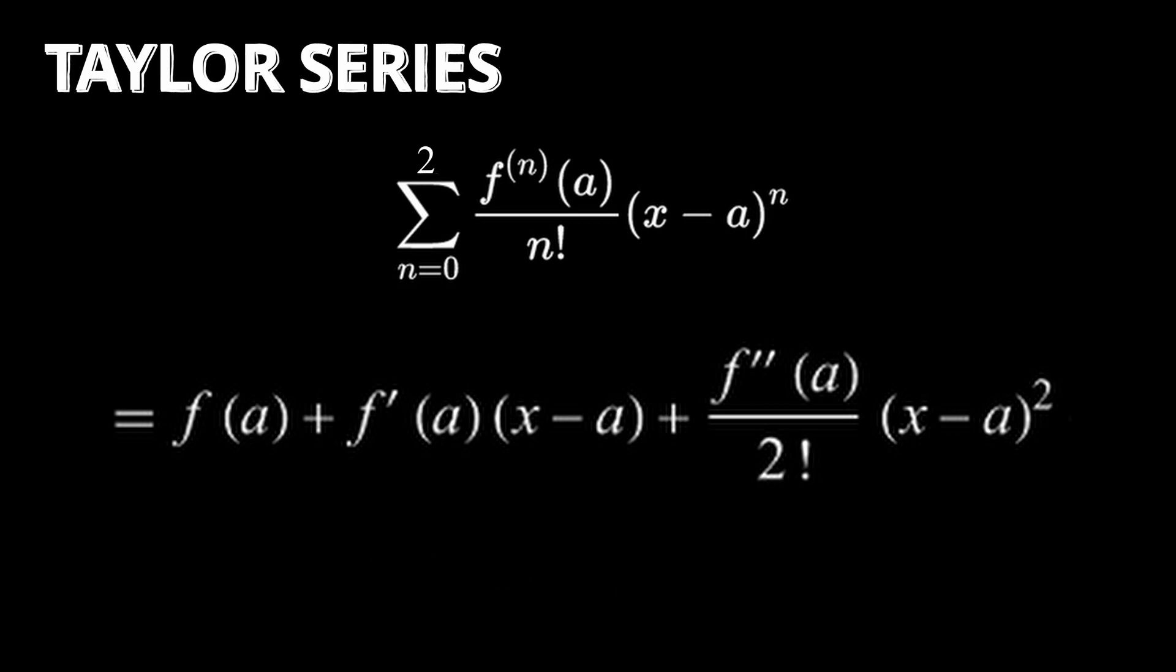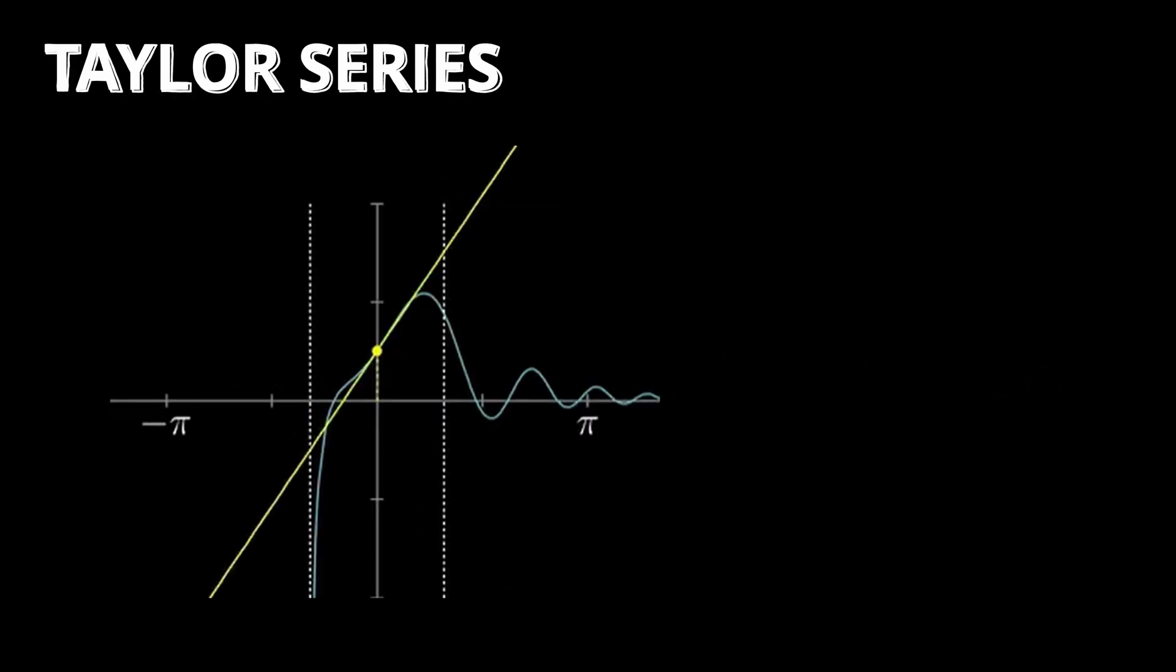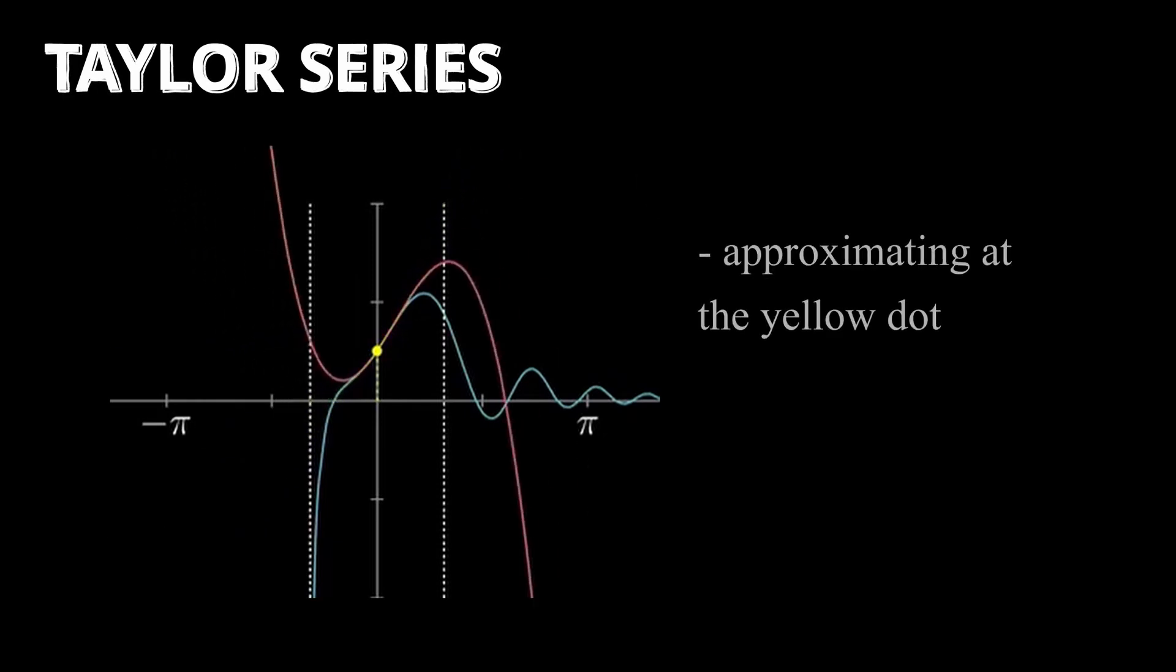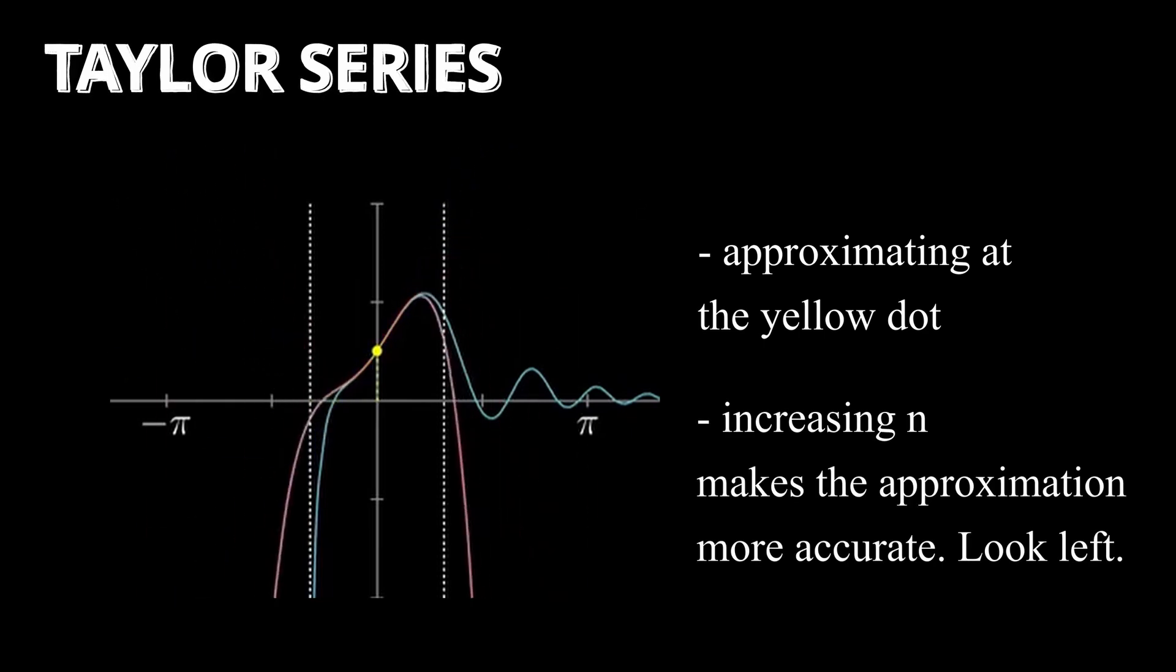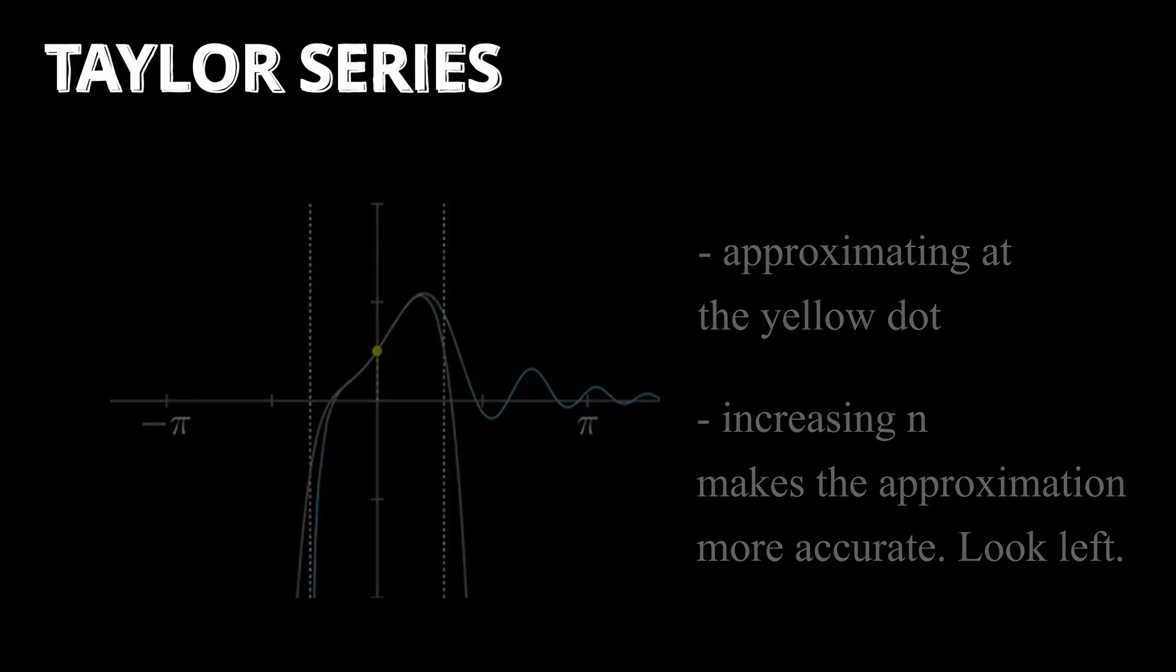So this polynomial is precisely the approximation of the function at a certain point. A cool fact about this series is that when you increase the value of n in your series expansion, you end up with a more accurate approximation of the function.